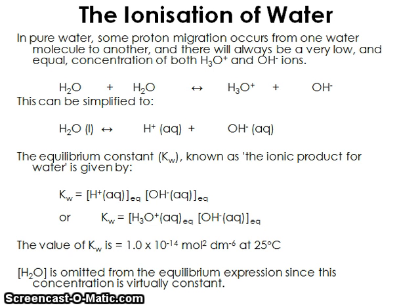Now, as you know from your work in equilibria, we can write an equilibrium constant for this because it's a reversible reaction. For this example, we have a special case — instead of calling it Kc as usual, we call it Kw, and we have a special name for it too. It's known as the ionic product for water, and the expression is: Kw equals H⁺ concentration times OH⁻ concentration.